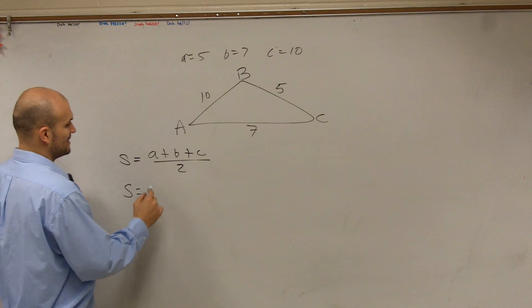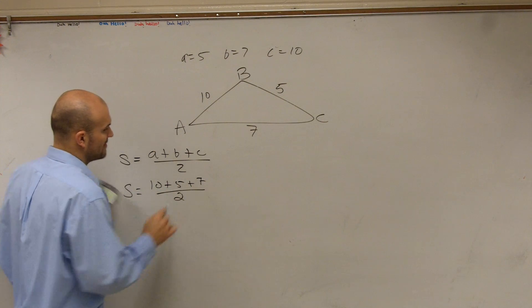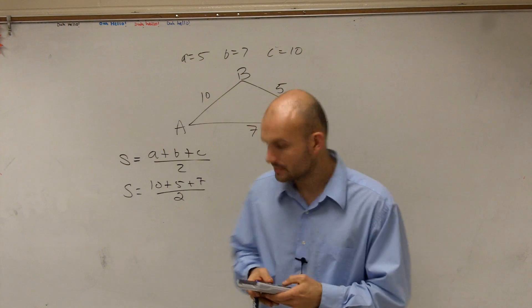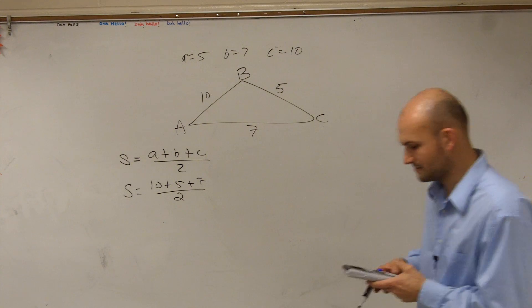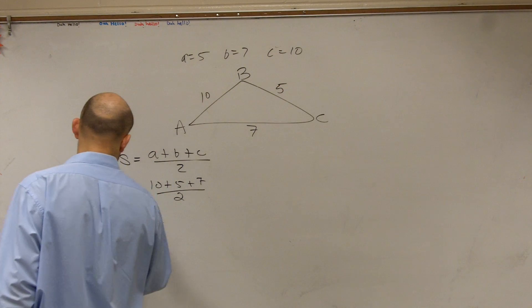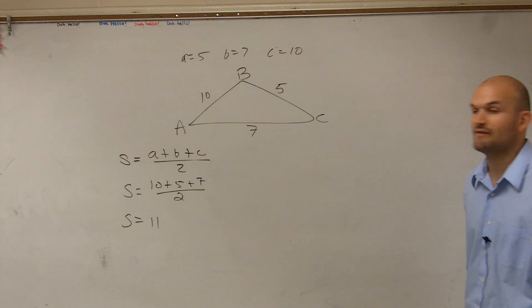So in this case, s is going to be 10 plus 5 plus 7 divided by 2. So we're going to have 22 divided by 2. Obviously, that was 11.